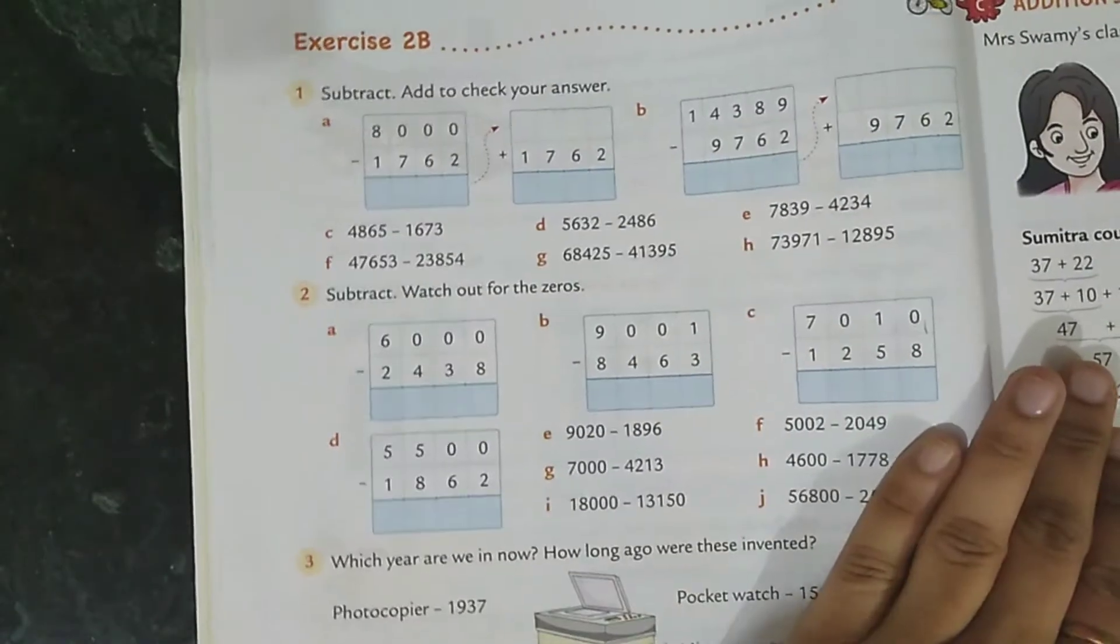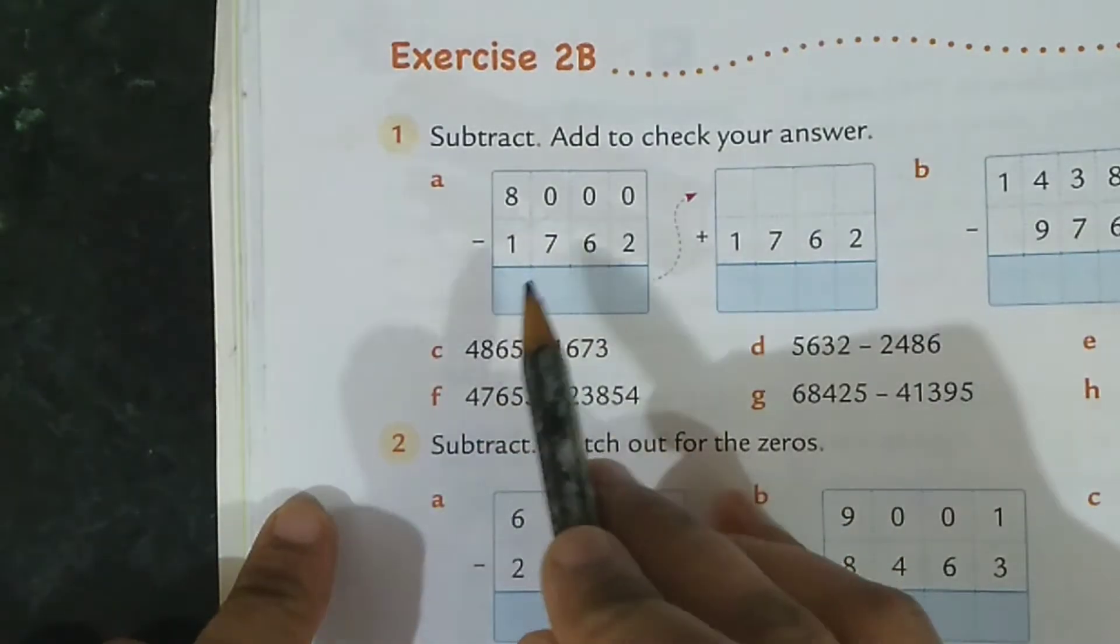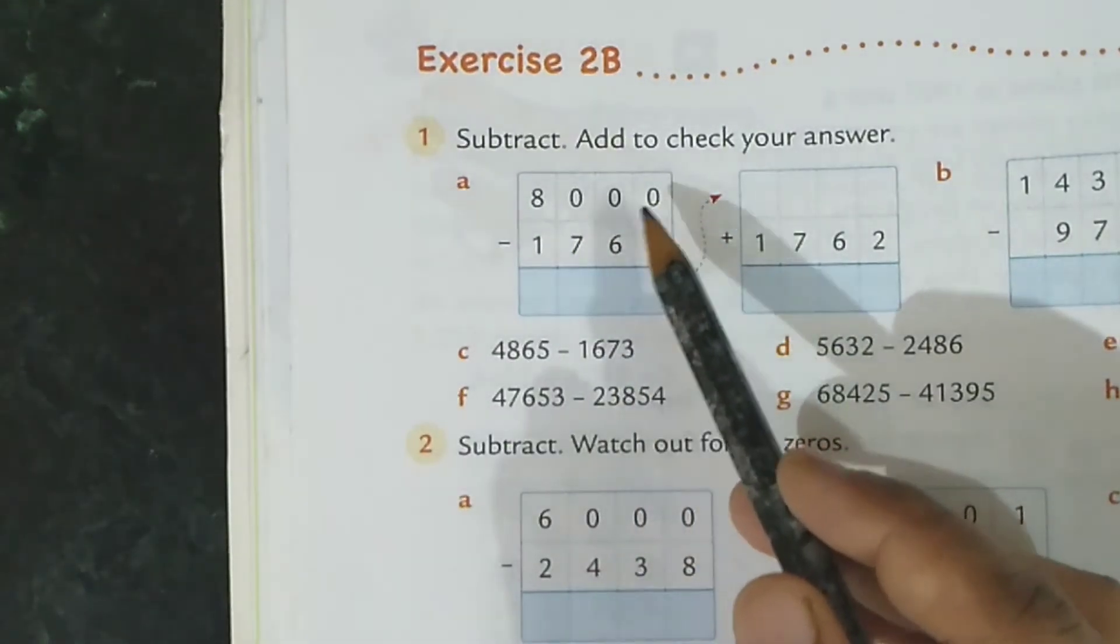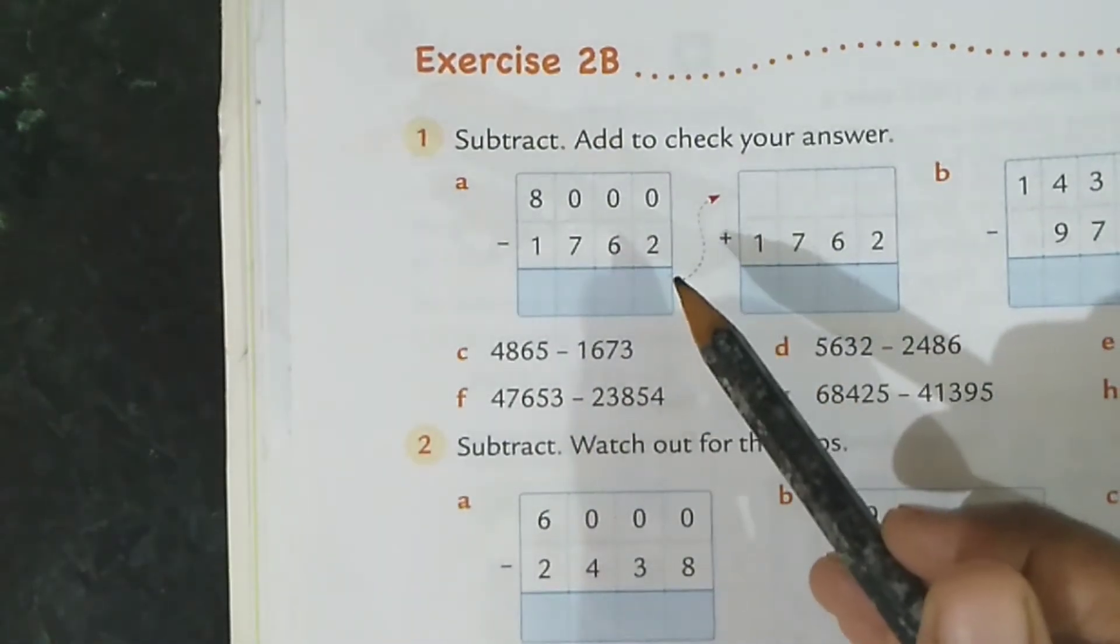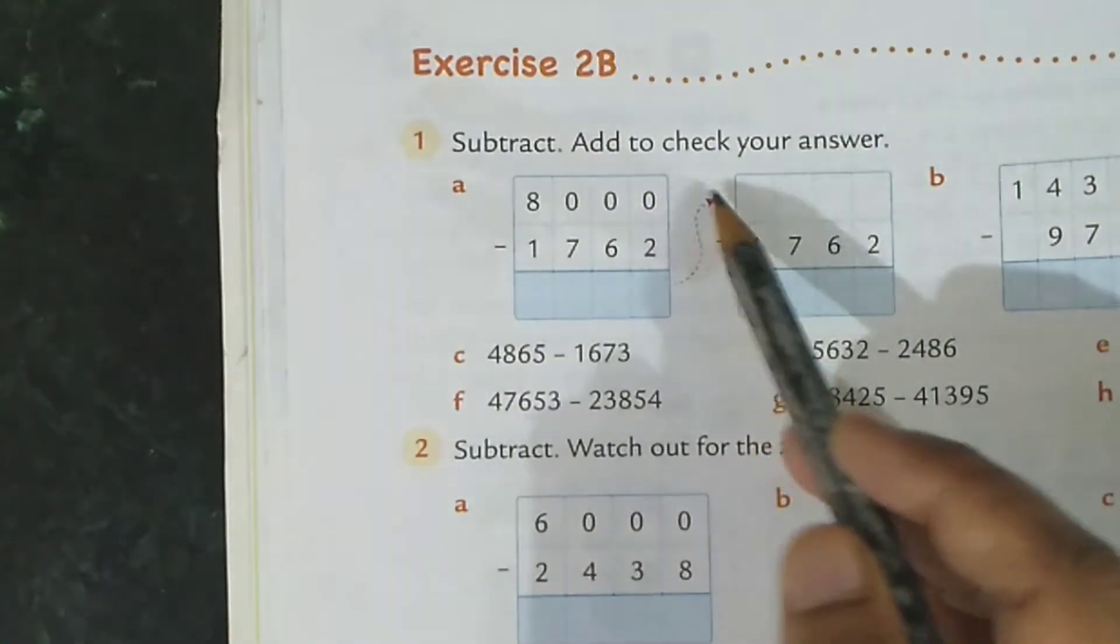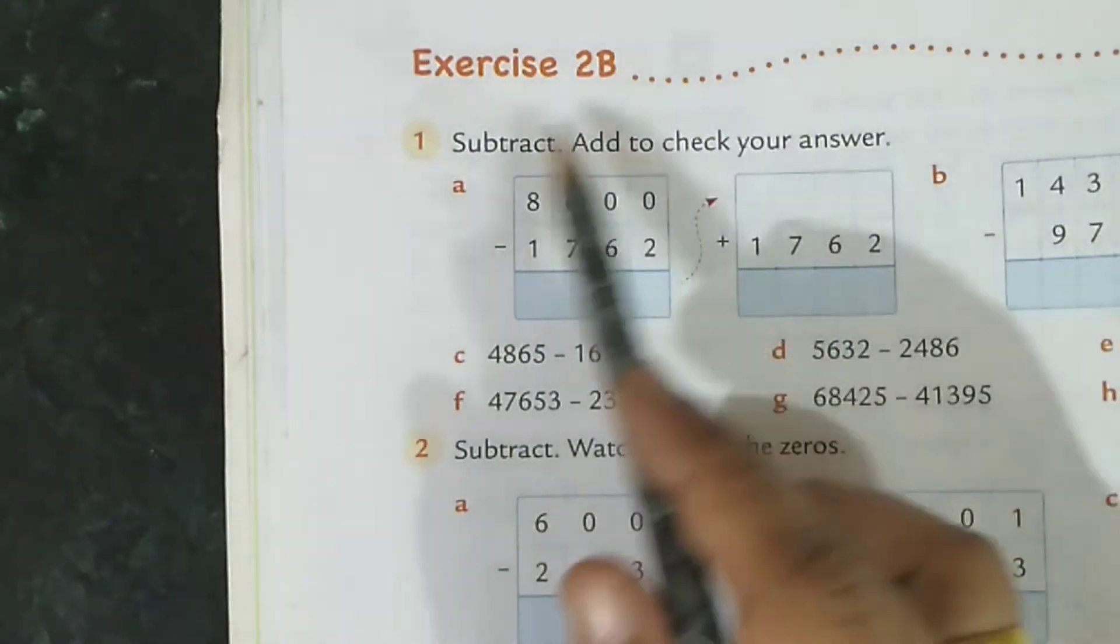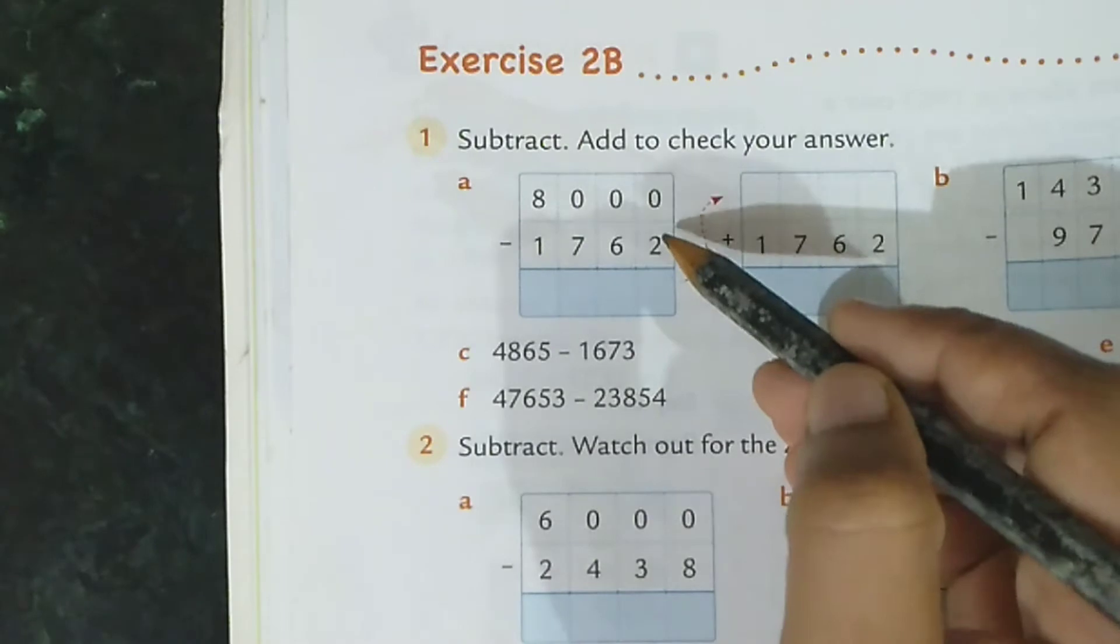Here question number 1 is subtract, add to check your answer. 8000 minus 1762. Students, if in minuend there is a 0 in 1, 10, 100 or 1000 place, then you can use that simple method which I taught you in previous video. You can minus 1 from both minuend and subtrahend. Okay? 0 minus 2 is not possible.